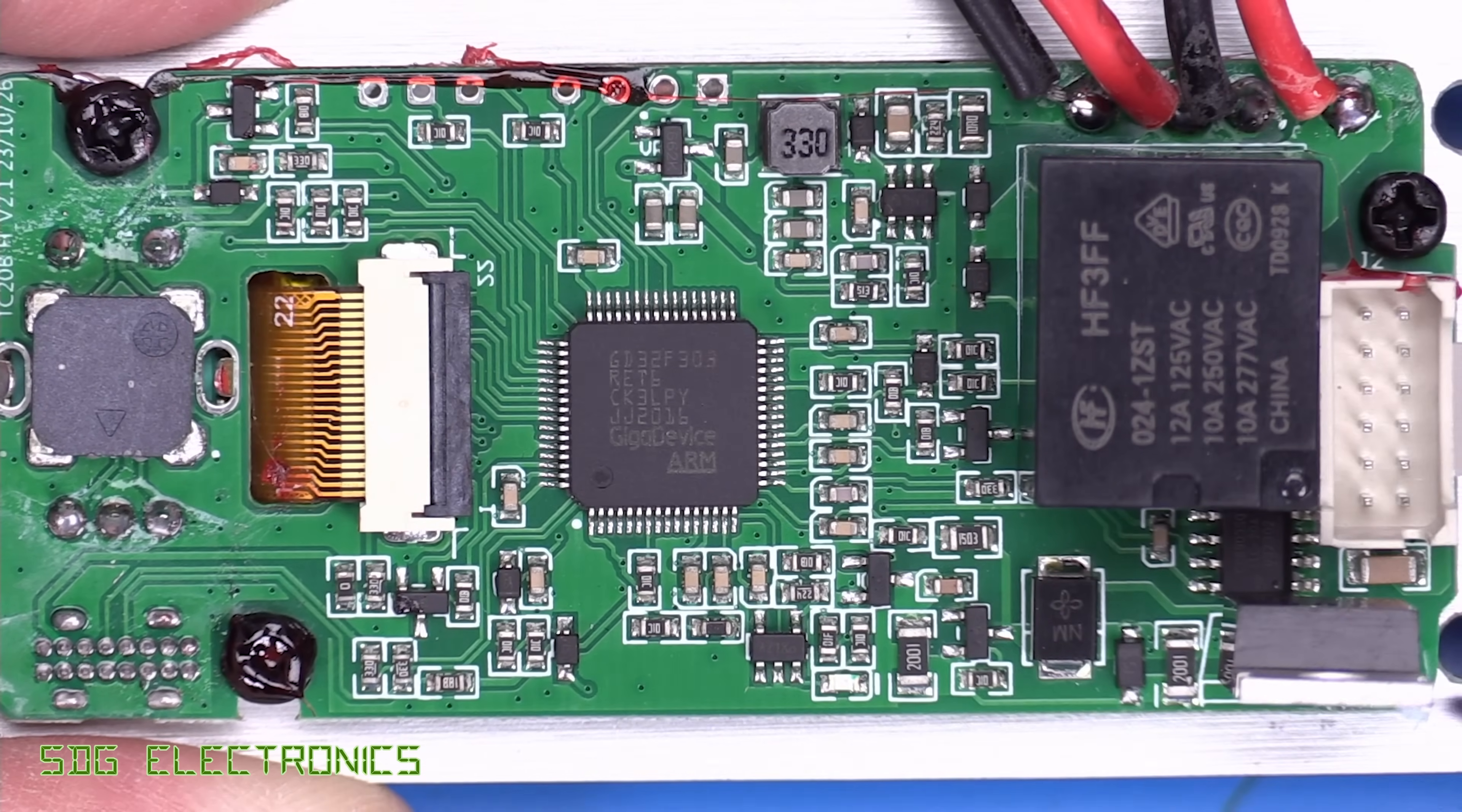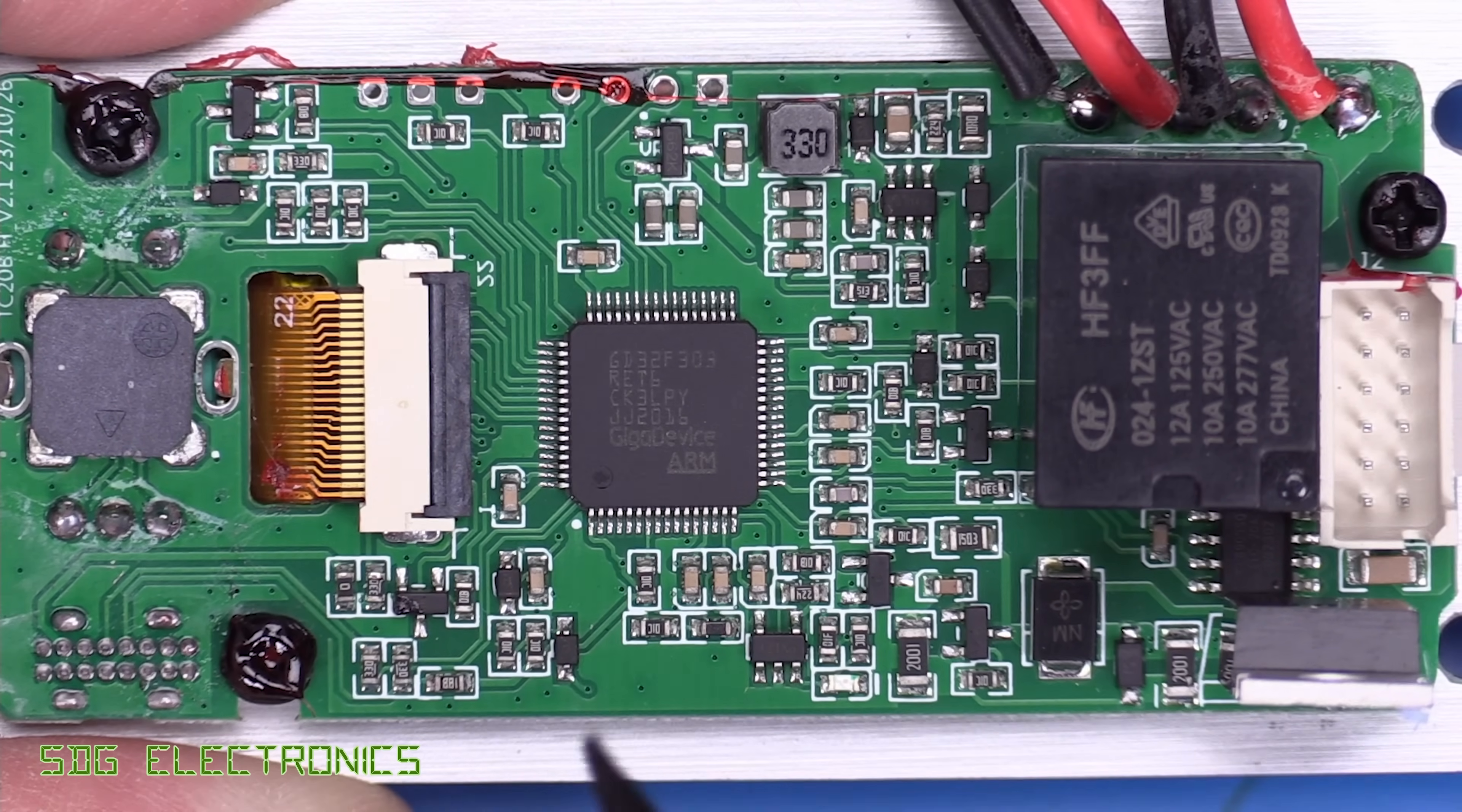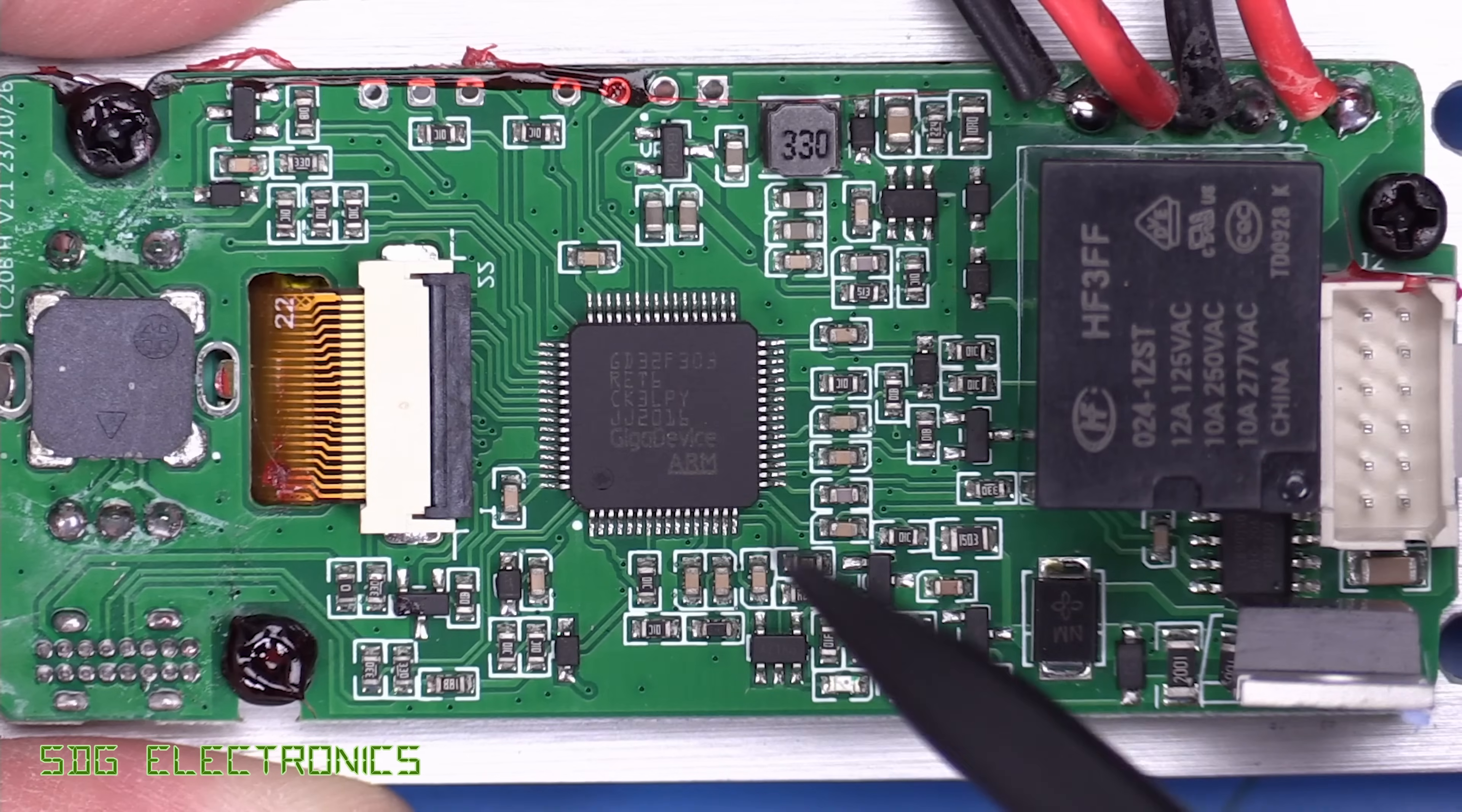Here's the front panel PCB. And it's fairly straightforward. There's nothing too complicated on here. So the main device in the middle here is the microcontroller that runs the LCD and runs all the control loops and everything. So a GD32F303 ARM microcontroller.